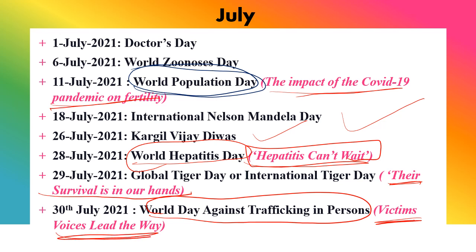So this was all about important days and dates from January till July 2021 with their themes. I hope you liked the video. Keep supporting Victor's Knowledge. Thank you and good luck.